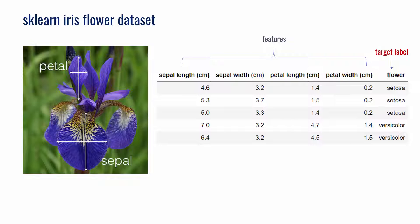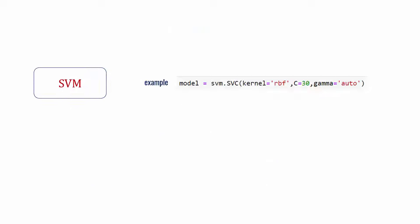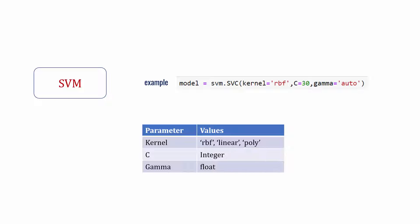Let's say you are trying to classify sklearn's iris flower dataset where, based on the petal and sepal width and length, you're trying to predict what type of flower it is. The first question that arises is: which model should I use? There are so many to choose from. And let's say you figured out that SVM is the model you want to use — the problem doesn't end there. Now you have hyperparameters: what kind of kernel, and what C and gamma values should I be using? There are just so many values to choose from. The process of choosing the optimal parameter is called hyperparameter tuning.